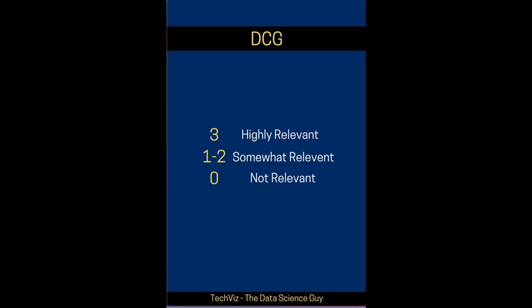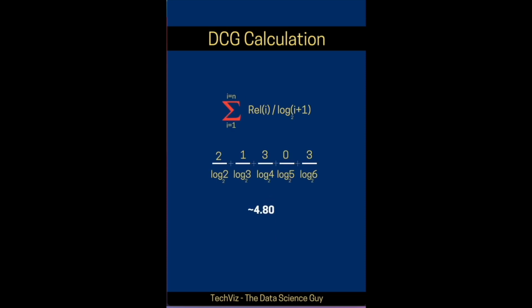So let's say for a search query, these are the relevance scores that we label for the top five results that our system gives out. We go ahead and apply the DCG formulation.